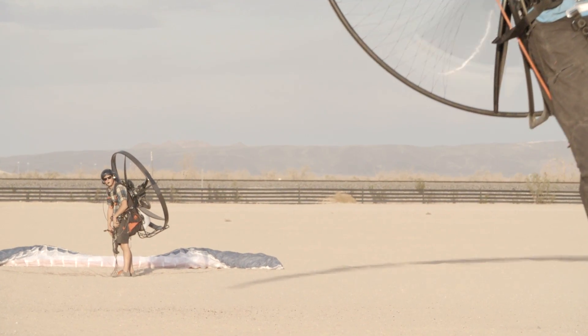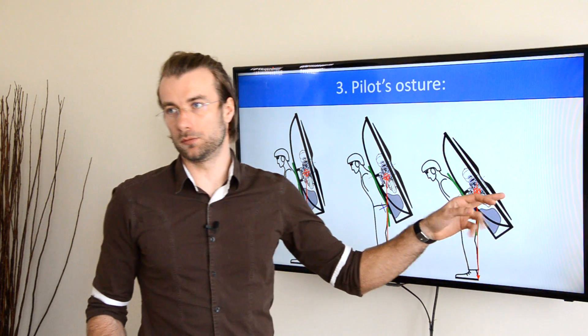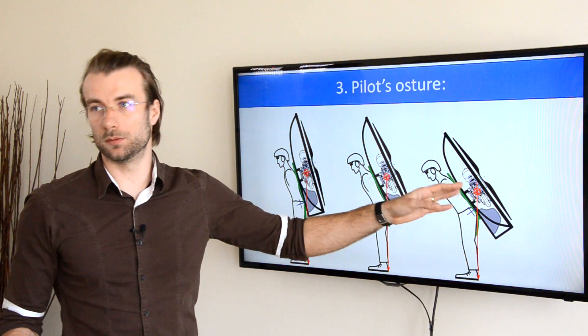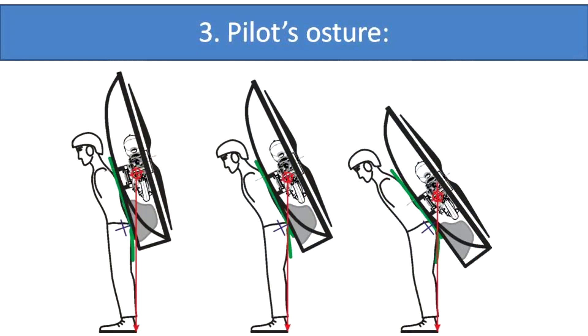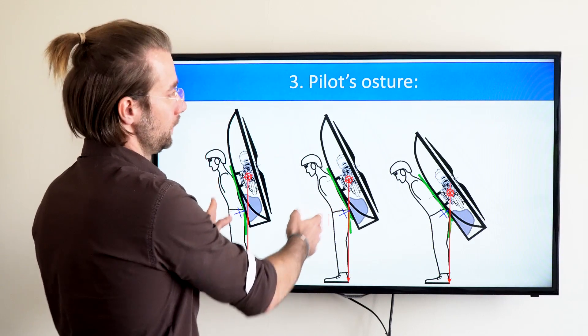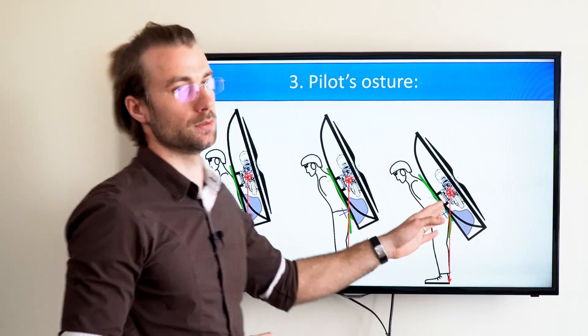Now let's see the correct posture with a paramotor that is hanging low on your back. You need to lean forward the most to get the center of gravity above your heels. Intuitively, just by looking at these pictures, you will see that running and ground handling with these two paramotors is obviously easier than with the low suspension one.